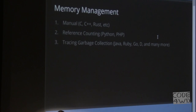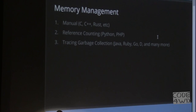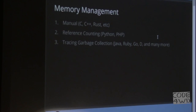The second approach is reference counting. Examples that use it are Python, PHP, and Erlang, to a certain extent for certain types of data. What it essentially comes down to is that the memory you use is wrapped in an extra structure where there's a counter. Every time you refer to it, that counter gets increased, and every time the pointer goes out of scope, it gets decreased. Once it reaches zero, the memory is released.